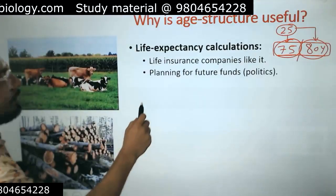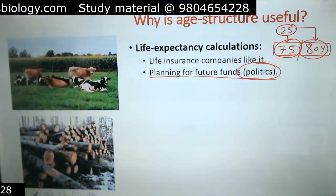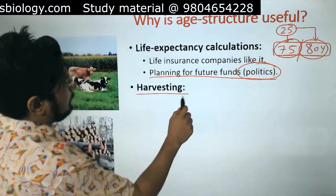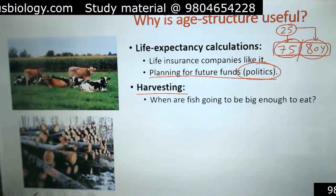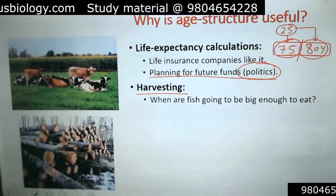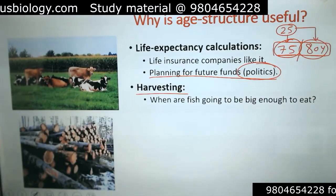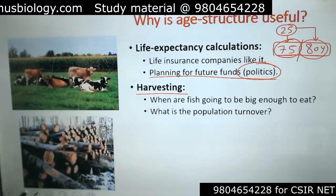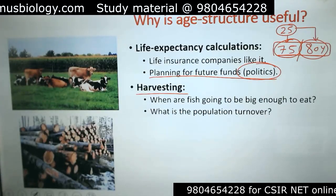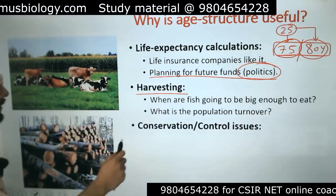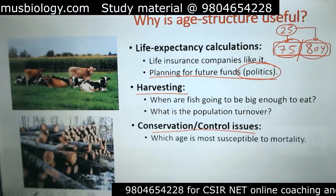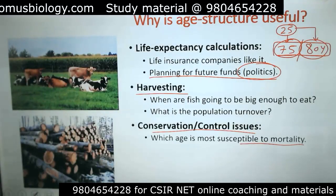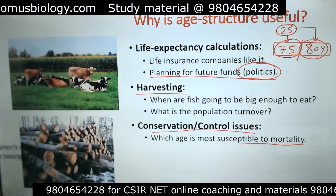Planning of future funds in politics also utilizes the same idea of life expectancy calculation. In agriculture and harvesting, they also utilize this age structure — for example, when fish are going to be big enough to harvest, they design the environment based on that. What is the population turnover and when can they harvest? All this information can be gathered. Conservation and control issues also incorporate life tables — which age is most susceptible to mortality, and based on that, we can protect an organism.